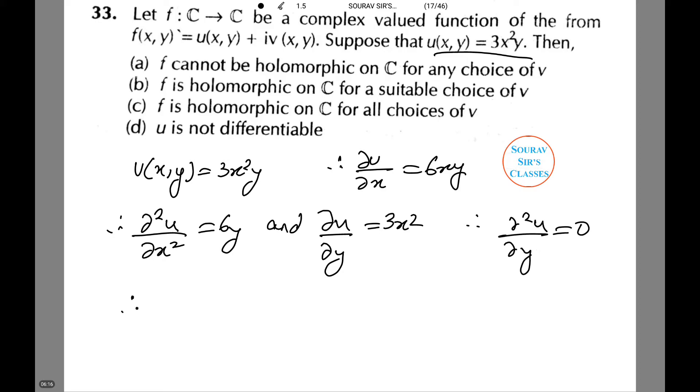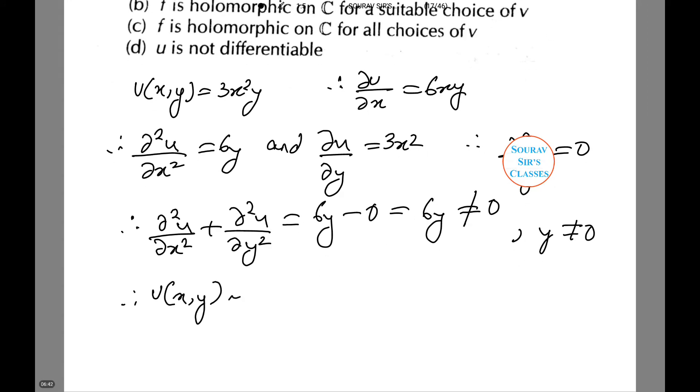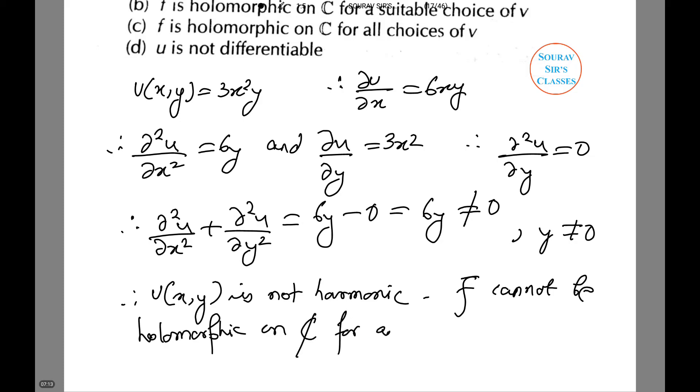∂²u/∂x² + ∂²u/∂y² = 6y - 0, which equals 6y, which is not equal to 0 if y ≠ 0. Therefore, u is not harmonic.